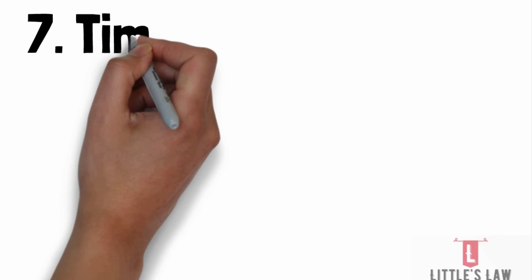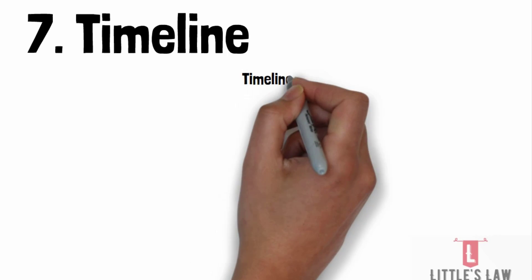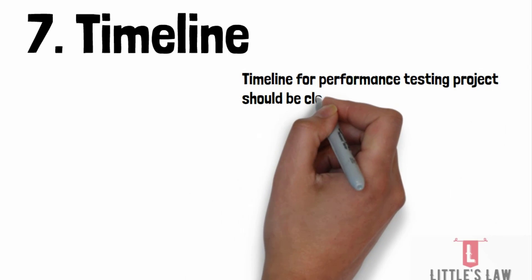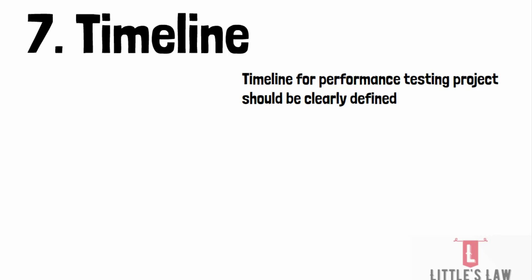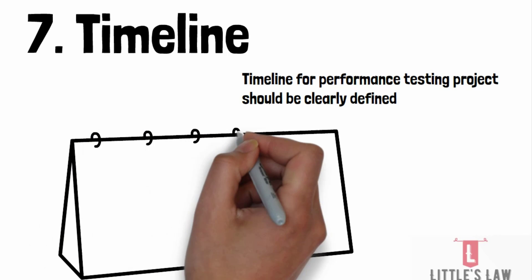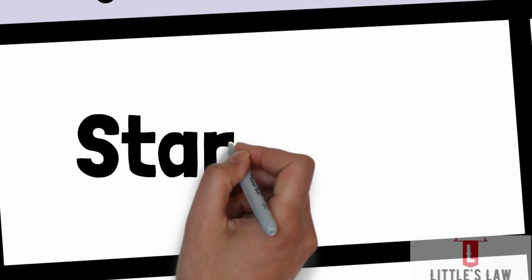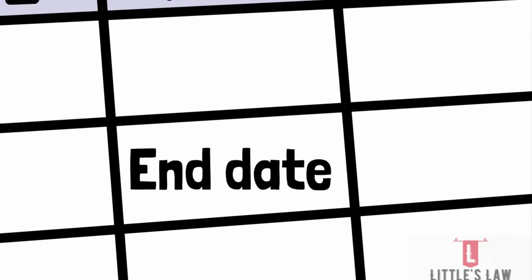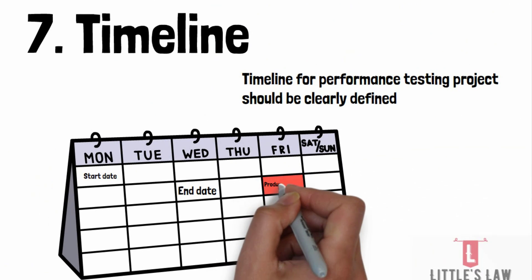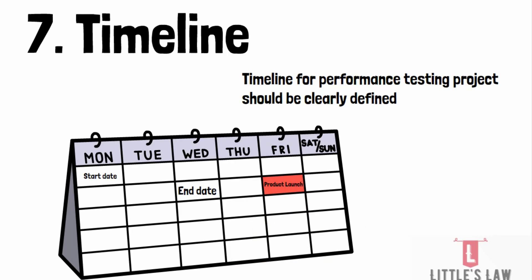The timeline for the performance testing project should be clearly defined, including the start and end dates, testing milestones, and any dependencies or constraints. For example, if the testing needs to be completed before a product launch, the testing timeline should reflect that. Your timelines have to be perfectly documented and planned to fall before the production release date.